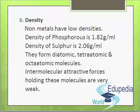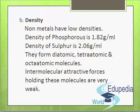The second property is density. Non-metals have low densities. For example, the density of phosphorus is 1.82 gram per milliliter and the density of sulfur is 2.06 gram per milliliter. Non-metals form diatomic molecules like N2, H2, O2, Cl2, F2; tetraatomic molecules like P4 (phosphorus-4); and octaatomic molecules like S8 (sulfur-8) and Se8 (selenium-8). They do not have any permanent electrical polarity and the intermolecular attractive forces holding these molecules are very weak. As a result, non-metals have low densities.